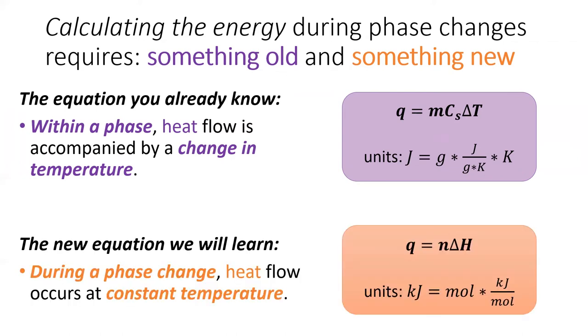For phase changes, we will learn a new equation, Q equals n delta H. During a phase change, all the heat added to a substance goes toward breaking the IMFs between particles, and the temperature will not change. By multiplying the moles of the substance times the phase change enthalpy, we can calculate the energy needed to complete the phase change. Note that these two equations usually use different units, so watch for that.